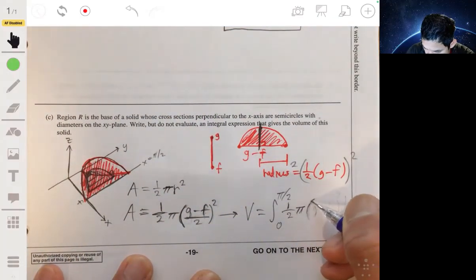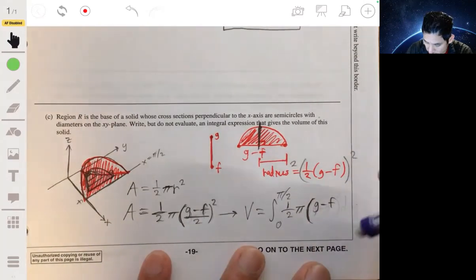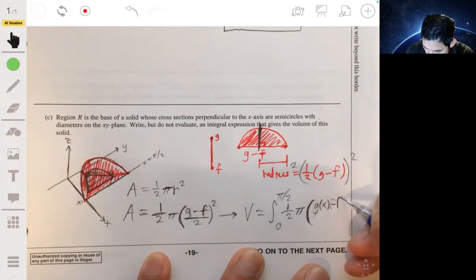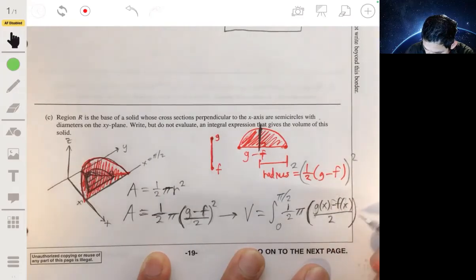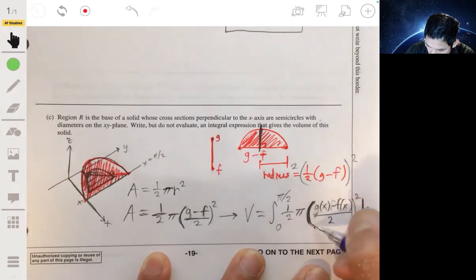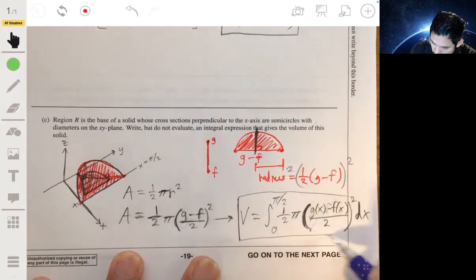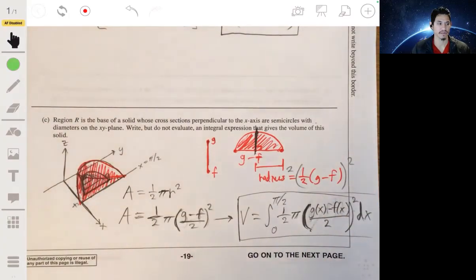So in here, you'll have a one half, π on the outside, times G(x) minus F(x) over two inside the parentheses, all that squared times dx. That'll be the proper integral. And that'll be your solution.